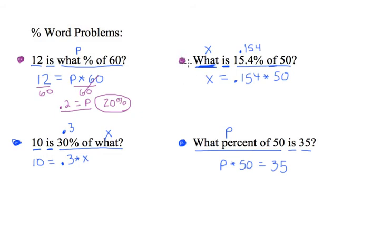Next one. What is 15.4 percent of 50? Now X equals, we just have to do this multiplication. So in a calculator, just type .154 times 50, you get 7.7. X equals 7.7.